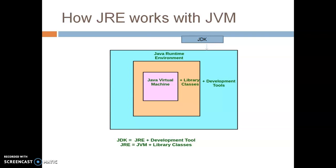JDK is the minimum requirement to develop a Java program. JDK is a collection of JRE plus development tools. D stands for development of Java program, and after development, it runs the program. But when we are talking about JRE, it only runs the program — behaving like a client, with no need for development tools. JDK is a collection of JRE plus development tools, meaning we develop the program and then execute or run it. JRE is a collection of JVM plus library classes. So: JDK is equivalent to JRE plus development tools, and JRE is nothing but JVM plus library classes.